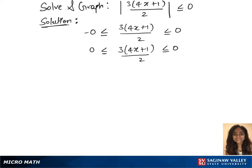We know that the absolute value cannot be less than 0, so we'll write this expression as 3 times 4x plus 1 over 2 equals 0.